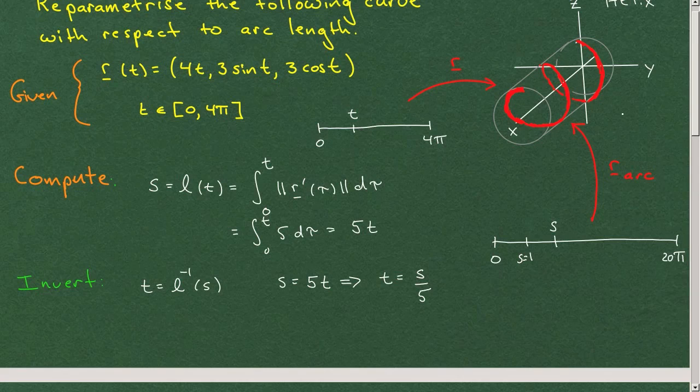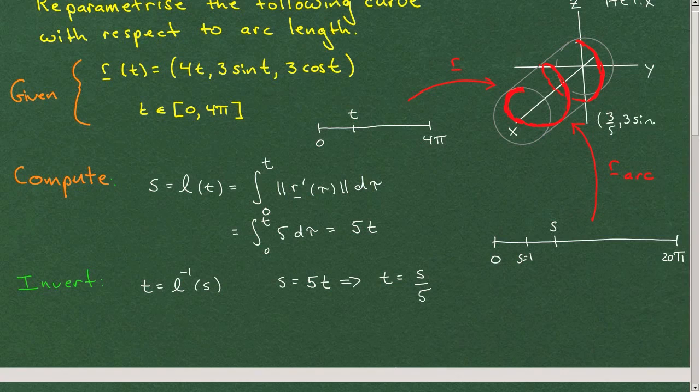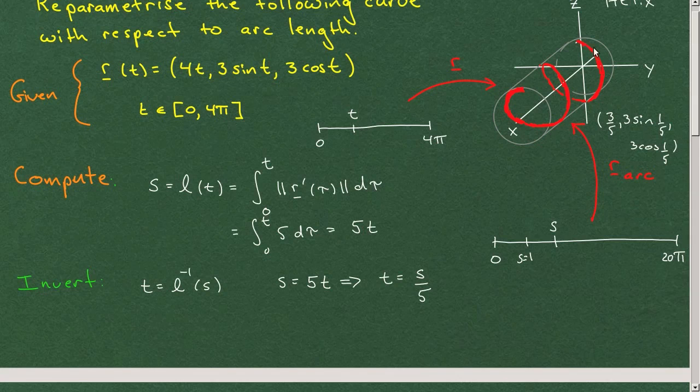So I'm not exactly sure where the point is. It's going to be not very far along the curve here. And it's going to be at the point 3 fifths, 3 sine of 1 fifth, 3 cosine of 1 fifth. So that corresponds to a point on here, and that will be exactly a distance, an arc length of 1 from the beginning of this curve.